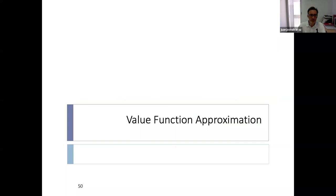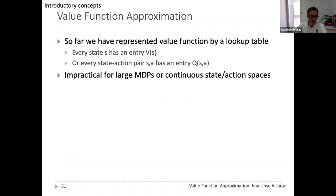Now we move to value function approximation — the technique that really makes RL algorithms useful in practice. Until now the value function was stored in a table: in prediction methods, each state s has an entry V(s); in control methods, each state-action pair has an entry in the Q table. However, for large MDPs with too many states or state-action pairs, this approach becomes infeasible.